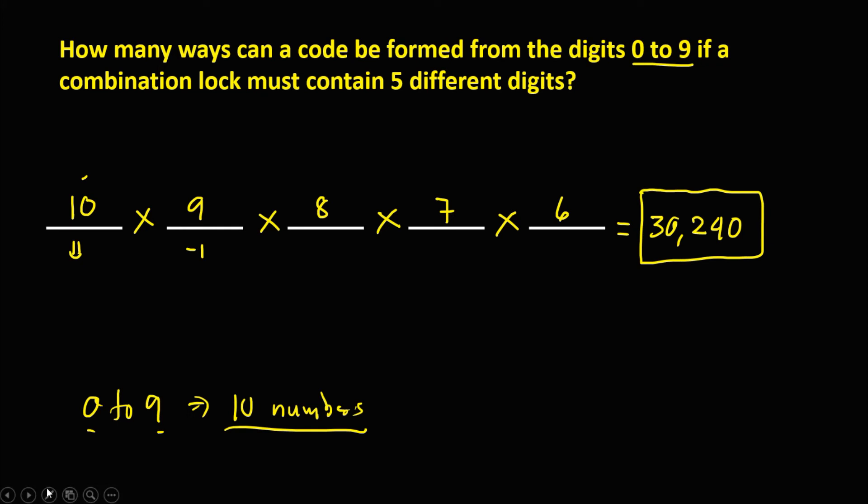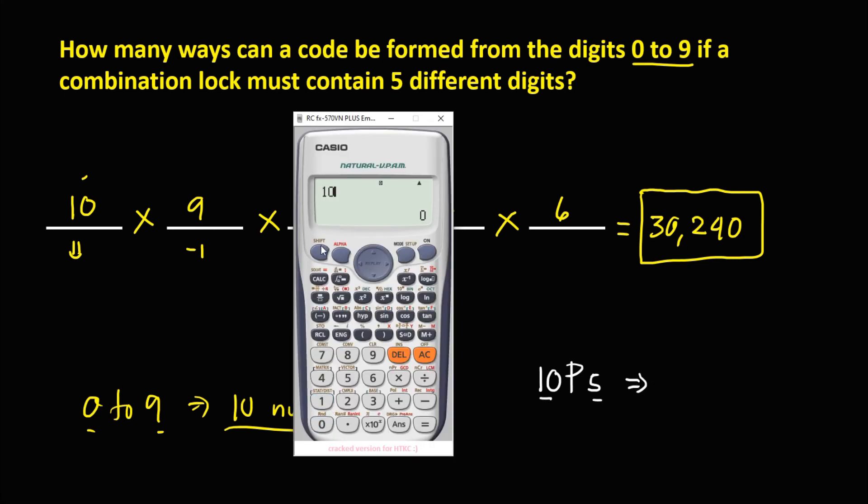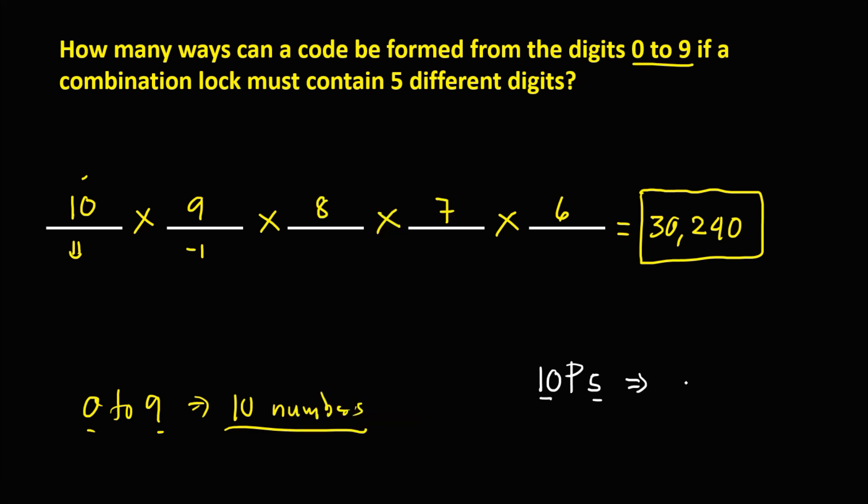And the other way to solve for this one using the permutation. So we have 10 permutation of 5. So 10 digits and 5 different digits. So we have 10 permutation of 5 equals, so that's 30,240. So this one is the same, 30,240.